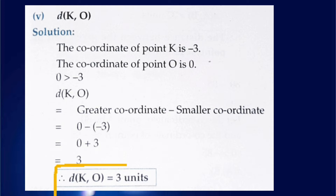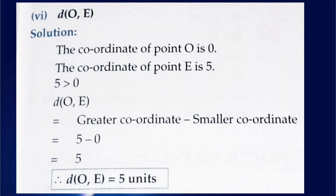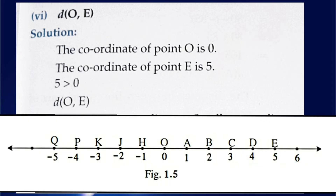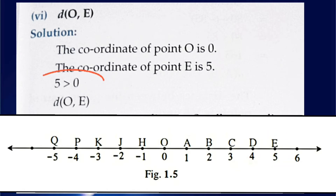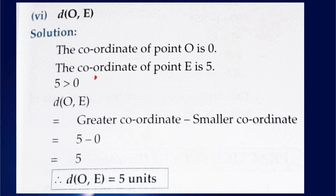The sixth part of question number 1 is the distance between point O and E. The coordinate of point O is 0 and the coordinate of point E is 5. Since 5 is greater than 0, the distance O and E equals greater coordinate minus smaller coordinate: 5 minus 0 equals 5. So the distance between point O and E is 5 units.